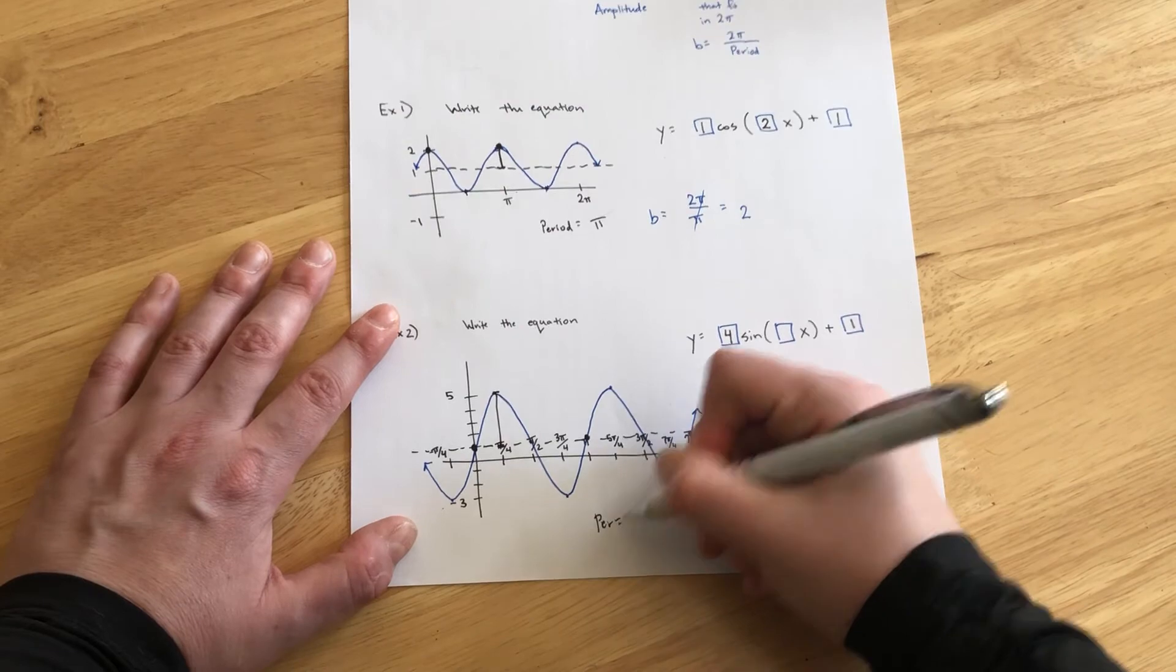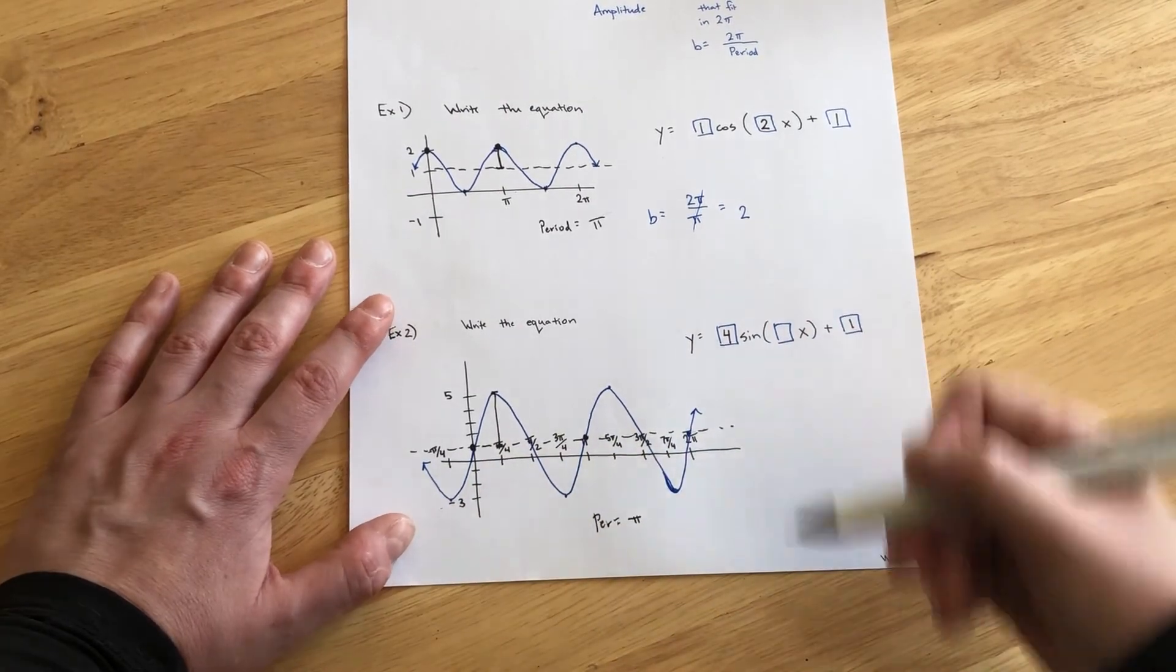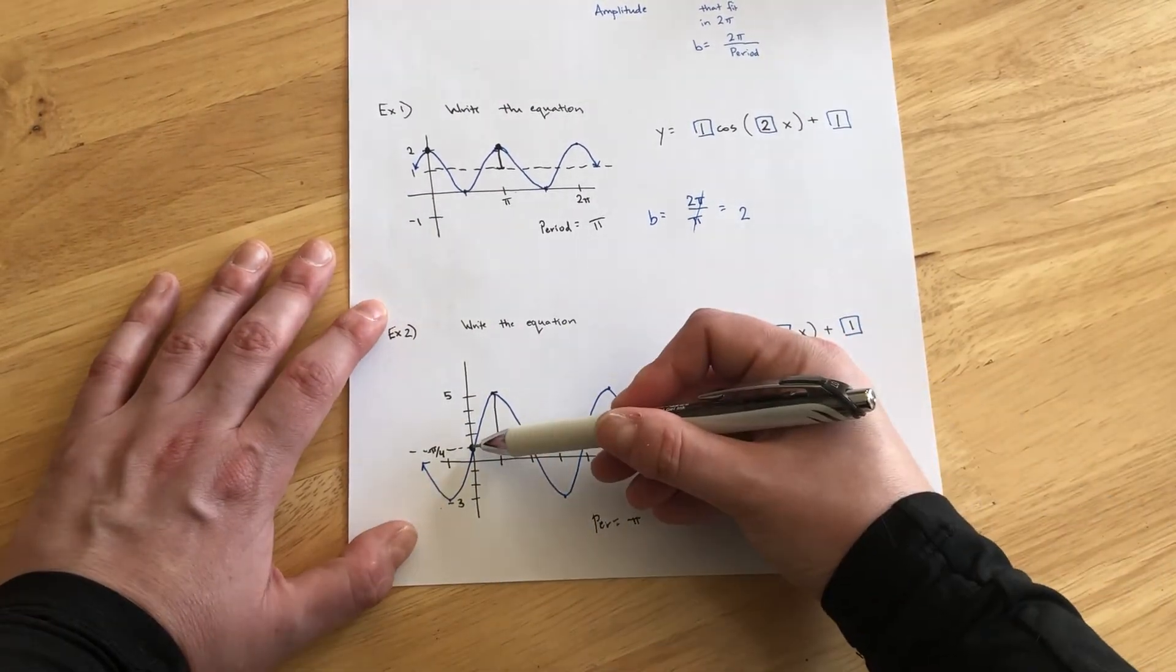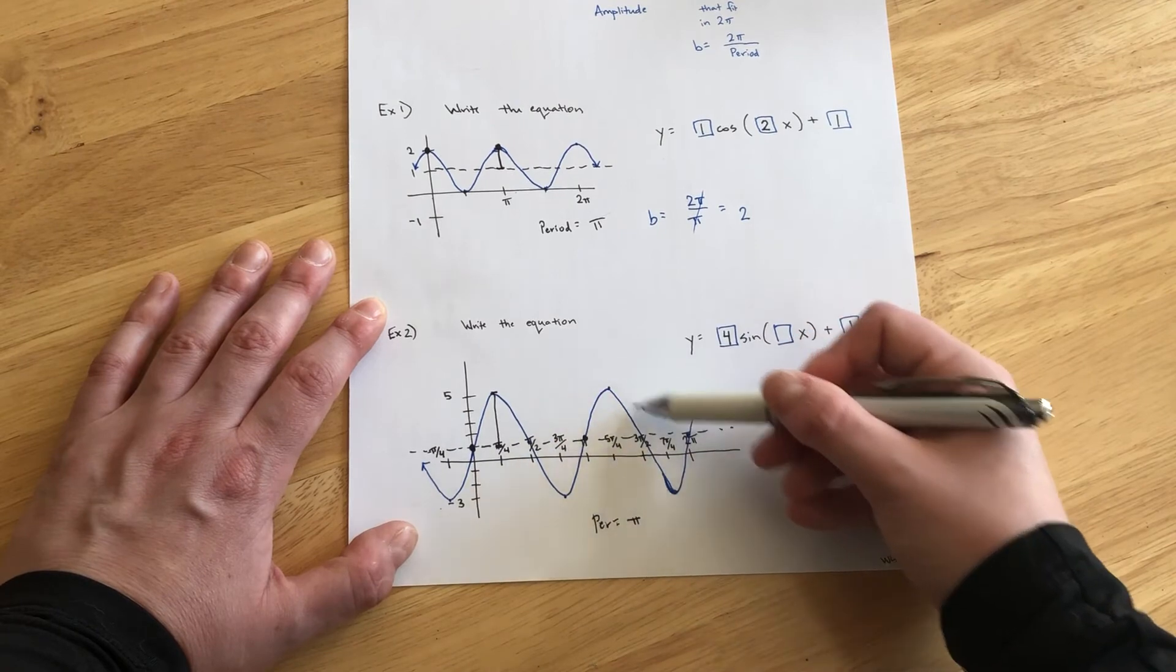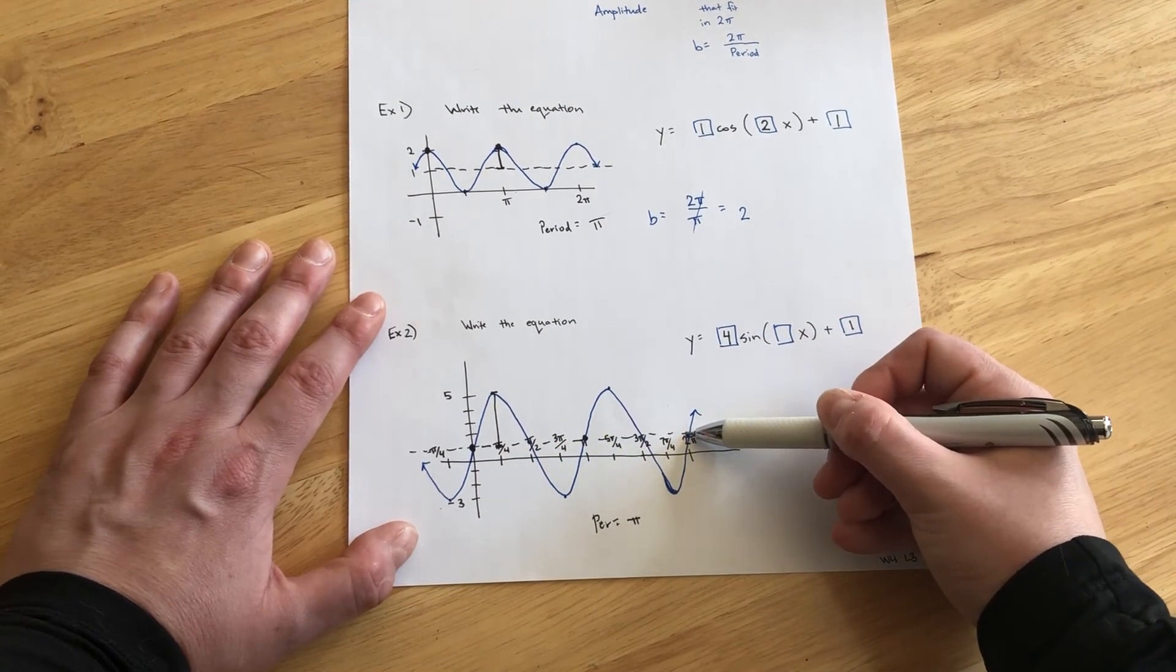So, the period of this function is π, very similar to before. We can see that there is one cycle, two cycles that fit in the space from 0 to 2π.